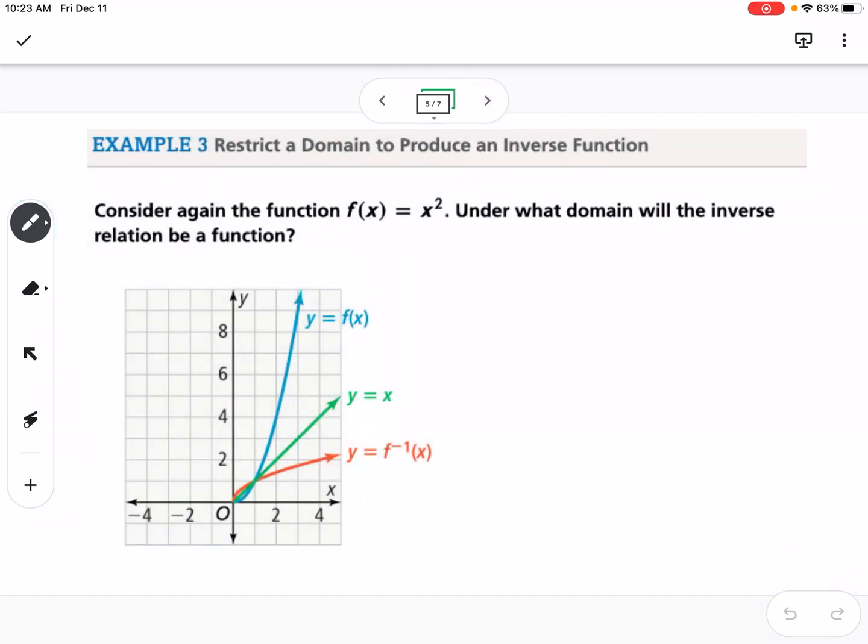Okay, so it says, can we consider restricting the domain of f of x equals x squared? So that way we will have an inverse function. So you can kind of see what we did down here. So if we change it, so if we take the domain of f of x equals x squared, instead of opening it up to all real numbers, what if we just say that it's from 0 to infinity? So that creates the half of a parabola that y equals f of x, and then that would mean that when we find the inverse, it's only going to be half of that, so therefore, it will be a function. So we can restrict the domain of different functions so that we have an inverse function.